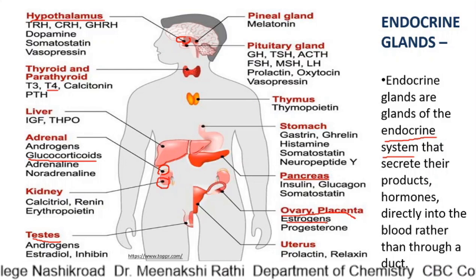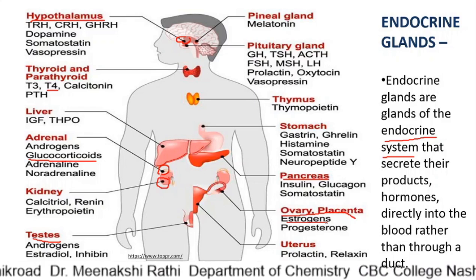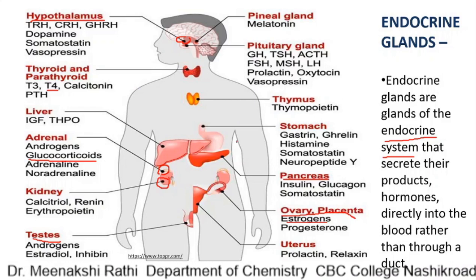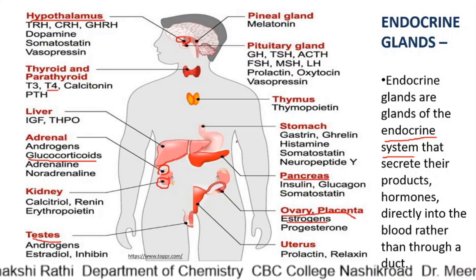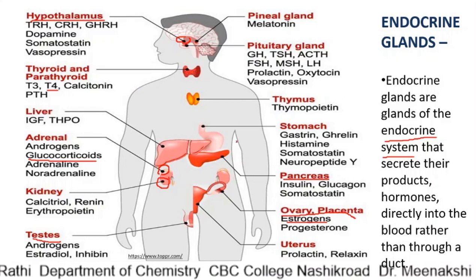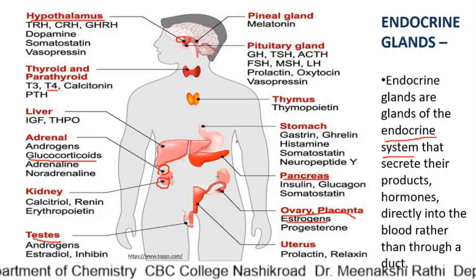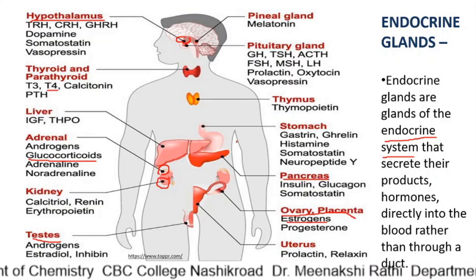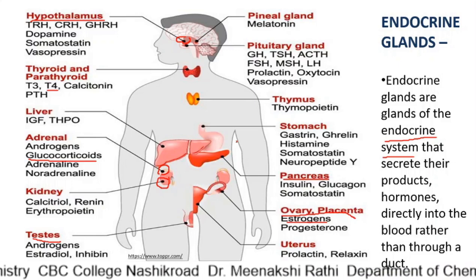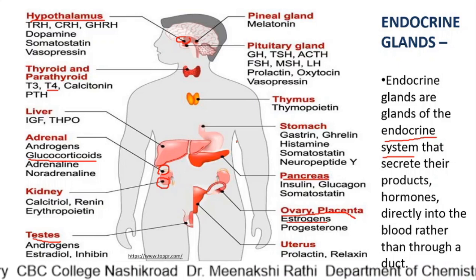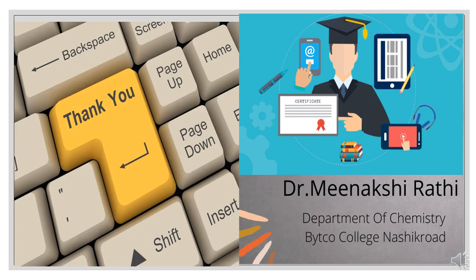Several gastrointestinal hormones such as gastrin and secretin have also been identified and are closely involved in the regulation of digestion and absorption of food substances. This covers the overview of endocrine glands.